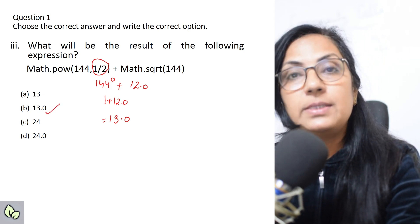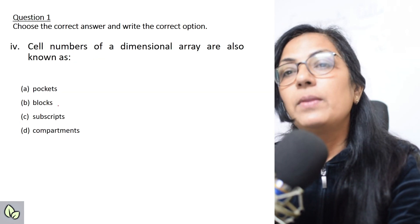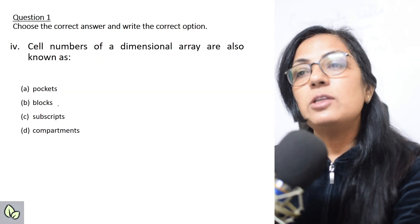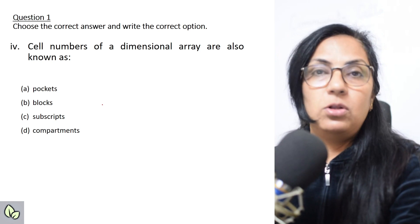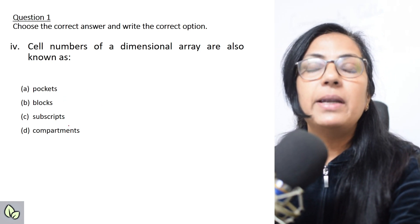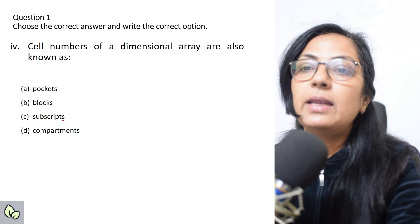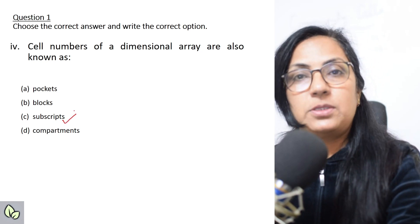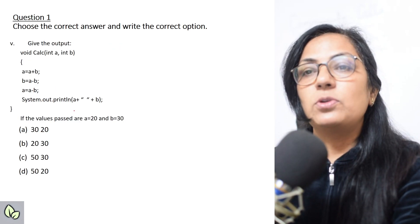The next one: cell numbers of a dimensional array are also known as pockets, blocks, subscripts, compartments? All of you know that the correct answer is subscripts. Next question: give the output.